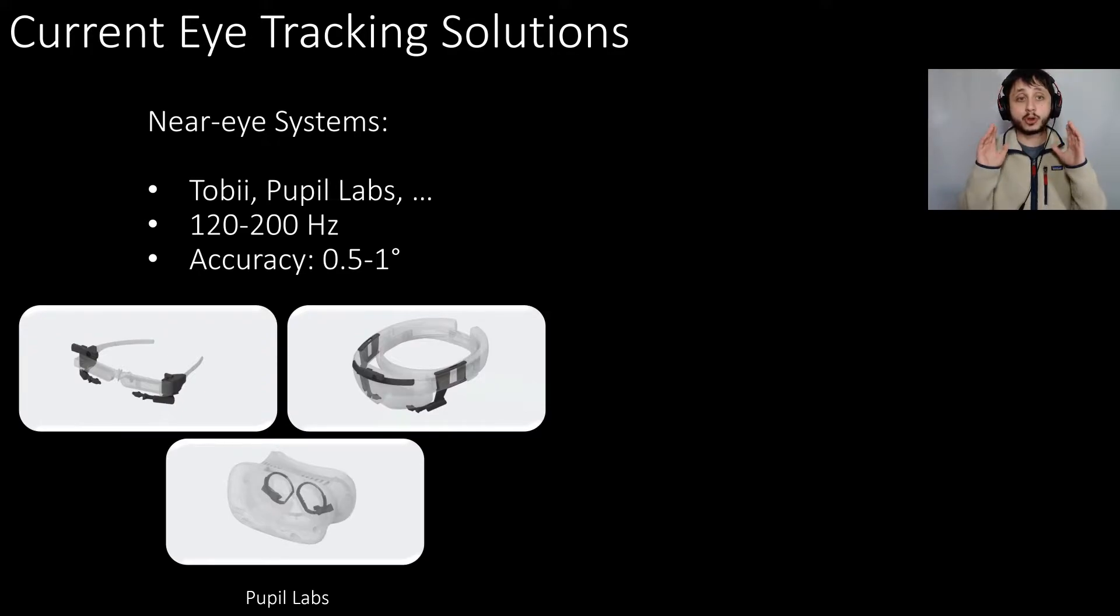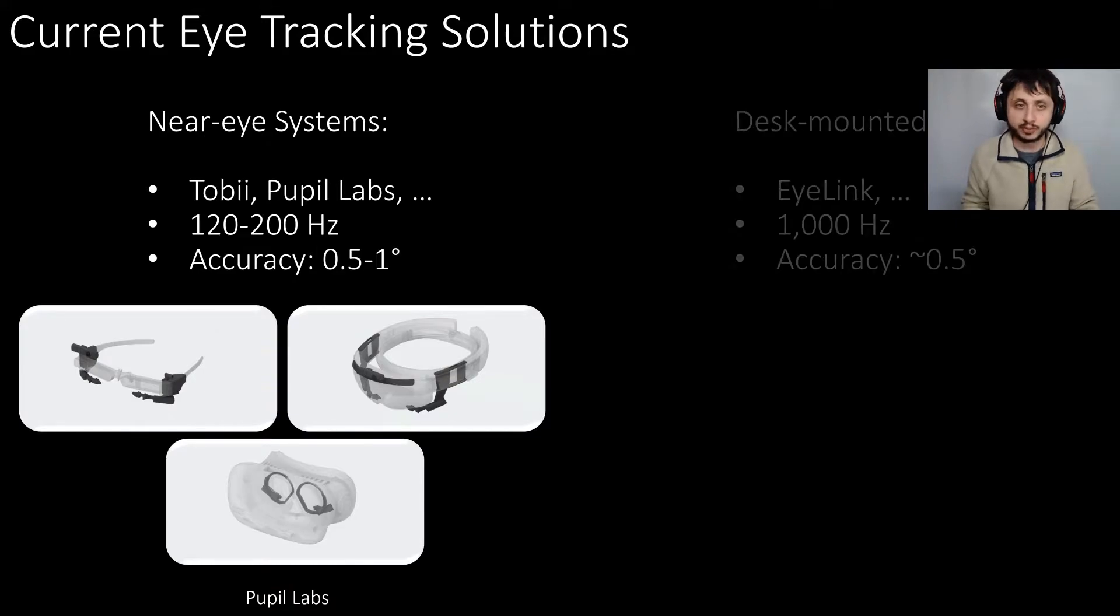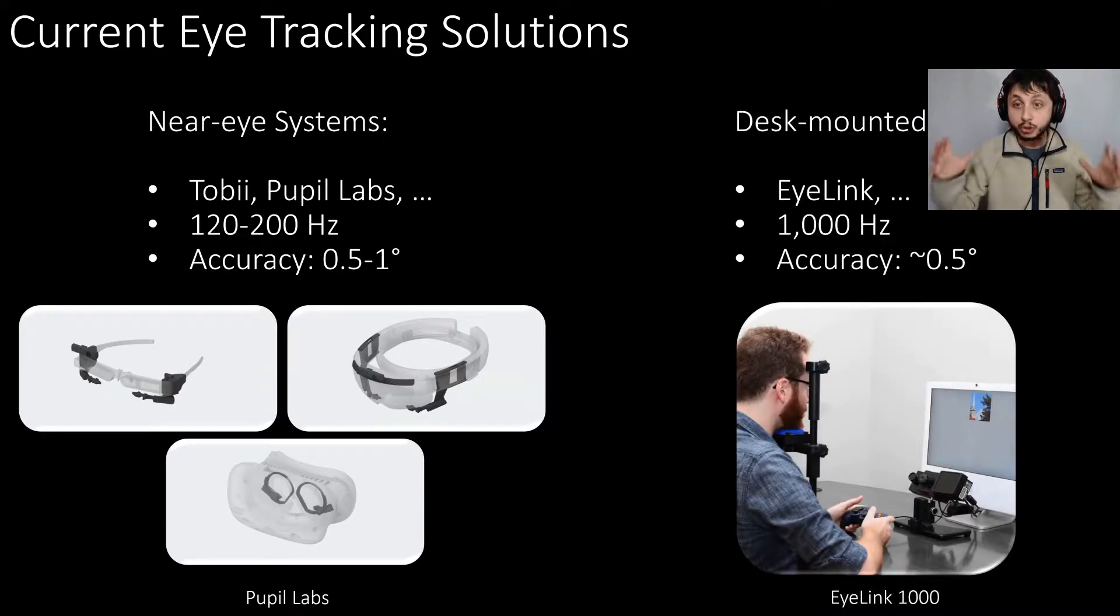Current eye tracking solutions usually fall into one of two camps. They're either near-eye systems that run at around 120 to 200 Hz and have a middling accuracy of half a degree to one degree. These are the things normally on AR/VR headsets. And then there's also the gold-standard desktop-mounted systems that usually are very expensive custom systems, like the EyeLink 1000, that run at around 1000 Hz, maybe 2000 Hz, and they have a high accuracy down to the physiological limit of about half a degree of visual angle.